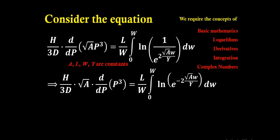ln of 1 by e to the power of x is same as e to the power of minus x. It's the property of exponent. So we can write ln e to the power of minus 2 root A W by Y into dW.